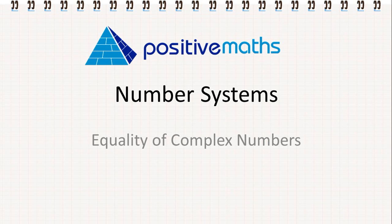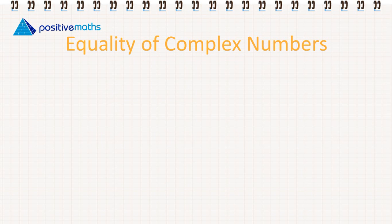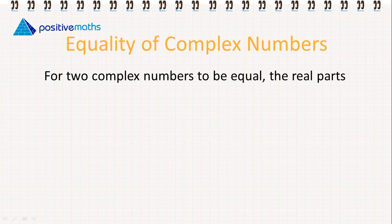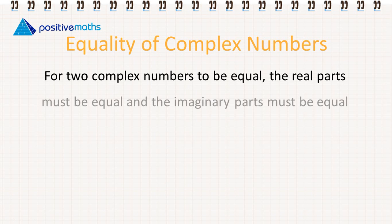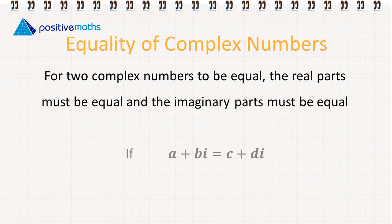In this video for Positive Maths we're going to learn about the equality of complex numbers. For two complex numbers to be equal, the real parts must be equal and the imaginary parts must be equal. If we have a complex number a plus bi and it's equal to another number c plus di, then a must be equal to c and b must be equal to d.